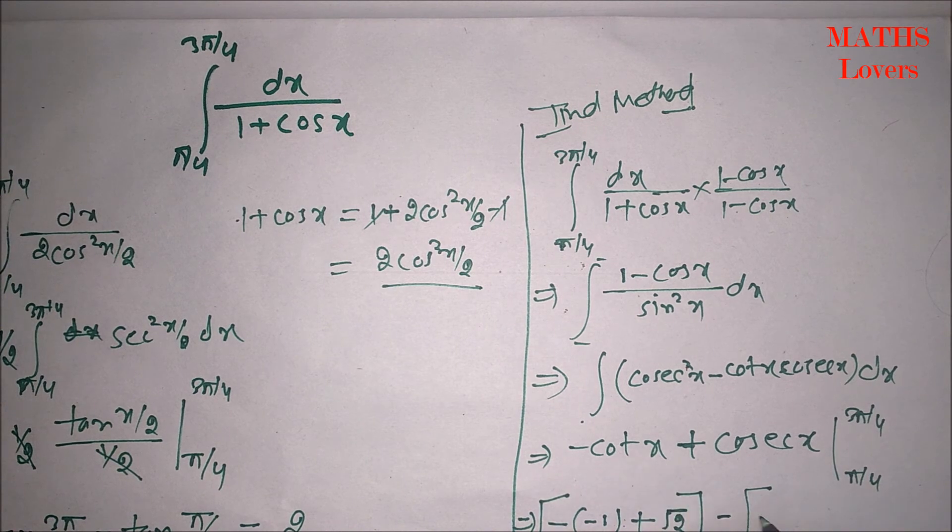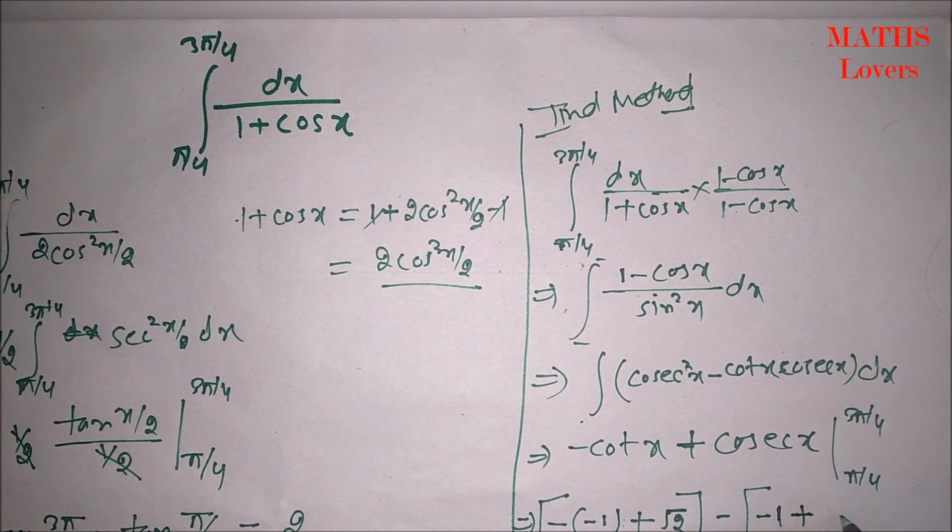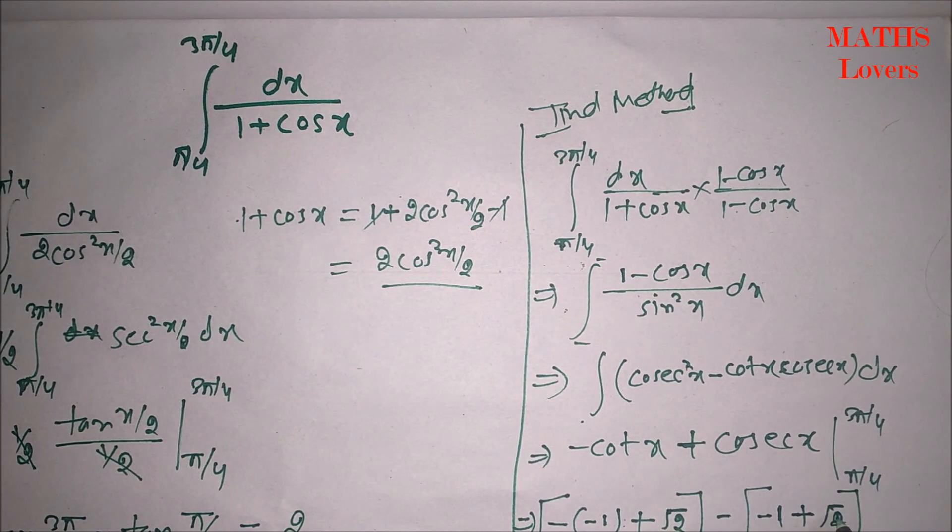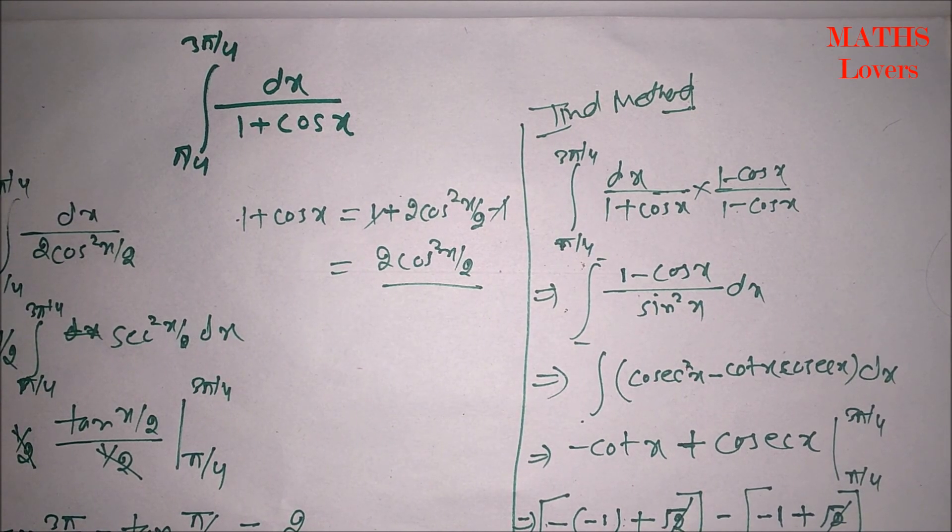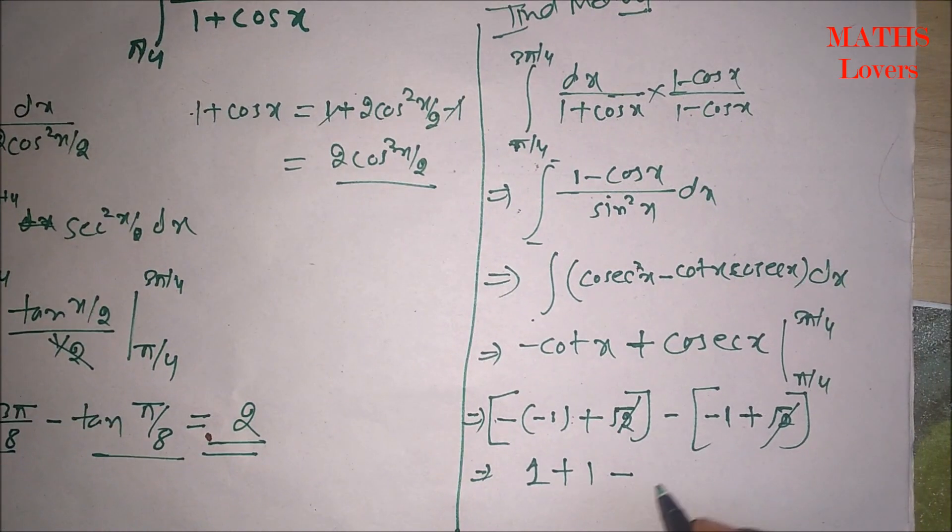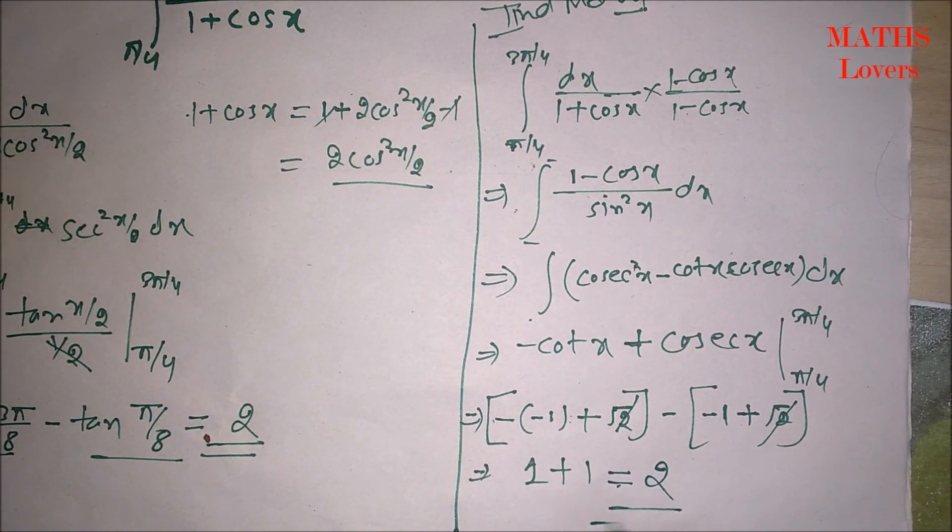Minus cot pi by 4 will be minus 1 plus cosec pi by 4. It will be root 2. So, you can see that root 2 root 2 is cancel out. And this is 1 and minus 1 minus 1 1. So, here our answer is 2.